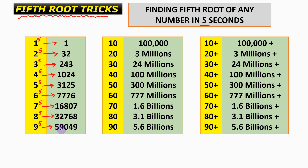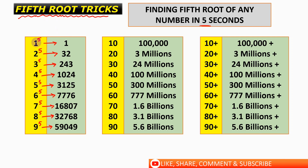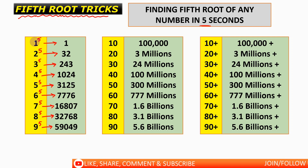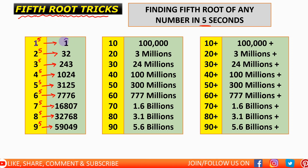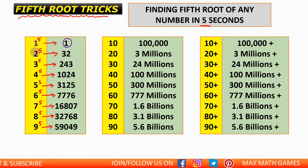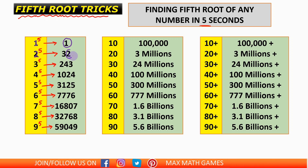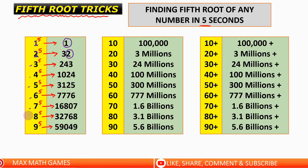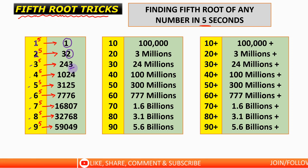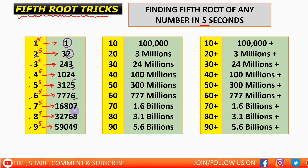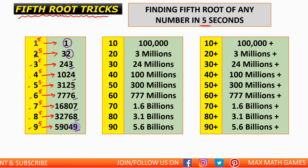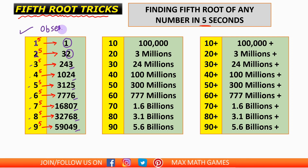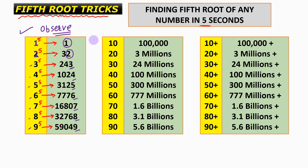9 to the power 5 gives us 59049. The important thing to observe is that the units digit of the result is the same as the original number. So if the original number is 1, the units digit is 1; if it's 2, the units digit is 2 — and similarly for 3, 4, 5, 6, 7, 8, and 9. This is not difficult to remember at all.